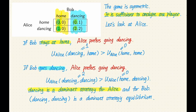And because the game is completely symmetric, dancing is a dominant strategy for Bob as well. Therefore, dancing dancing is a dominant strategy equilibrium of this game. And this is the only dominant strategy equilibrium of the game.